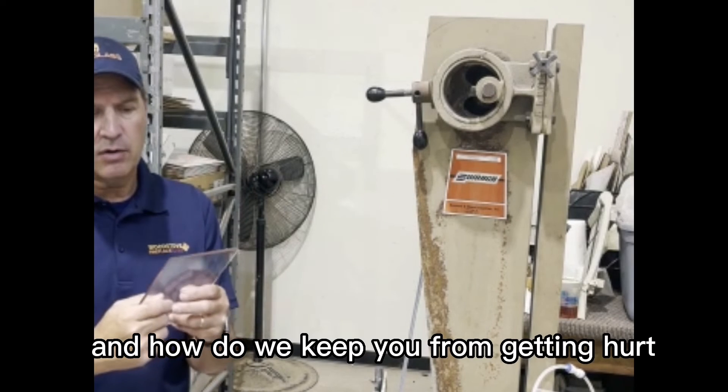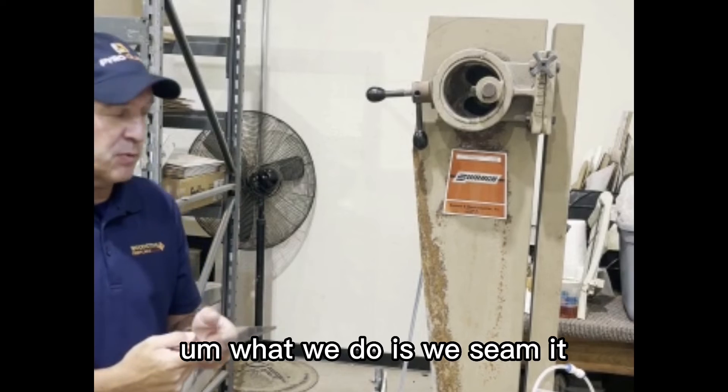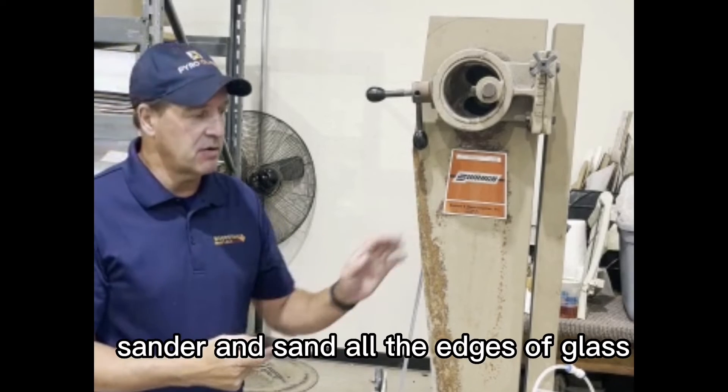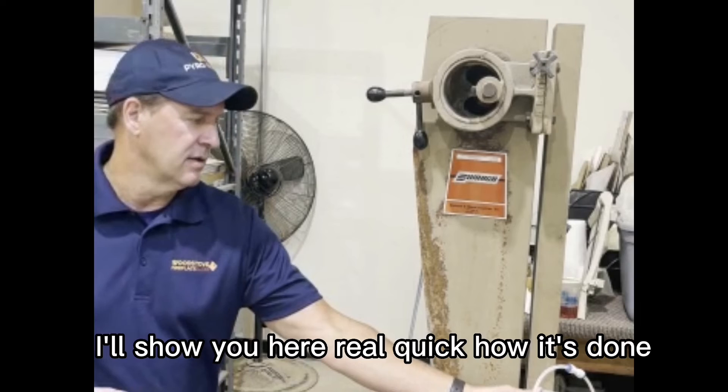How do we keep you from getting hurt? What we do is we seam it, which basically means we use a wet belt sander and sand all the edges of the glass. I'll show you here real quick how it's done.